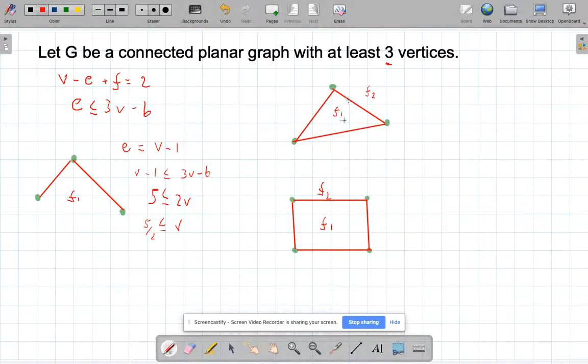So this face one has one, two, three that enclose it. And this face two will need one, two, three to enclose it. And in this particular graph, each of them has four. So it's at least three.